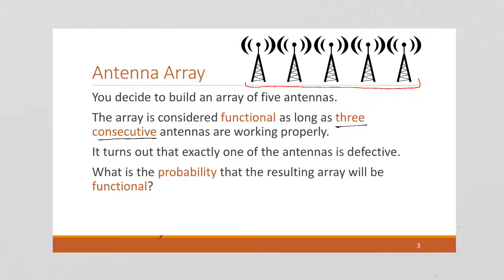But if this middle one doesn't work, then we're out of luck because we only have two here and two here. There aren't three in a row. Now, given that, it turns out that exactly one of the antennas is defective. So we want to figure out what is the probability that the resulting array will be functional. You might be able to eyeball this and figure it out, but let's go on and do the math.